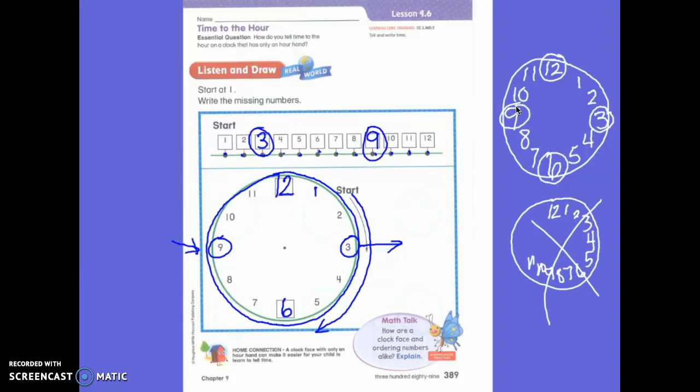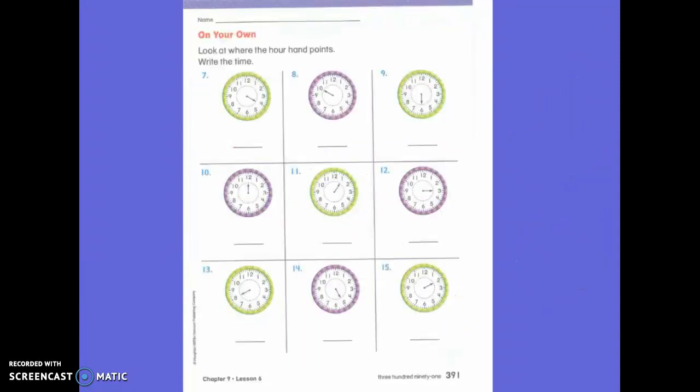Now, what numbers were missing on my clock face? Twelve and six. So, please write the twelve and the six. Remember, first grade, that we start here. Whoops, I need a different color. That we start here and we go around the clock this way. Okay. So, that is called clockwise. Let's turn the page over.